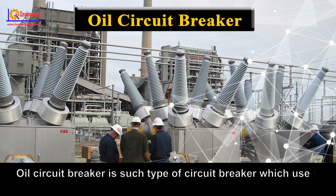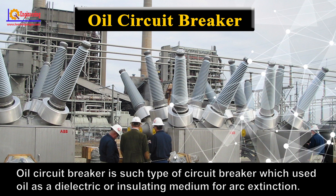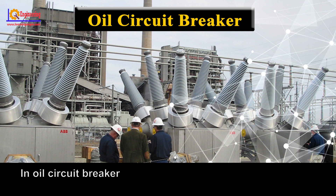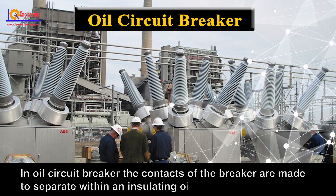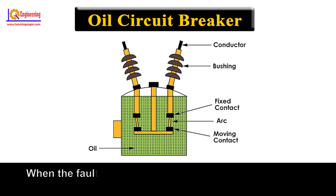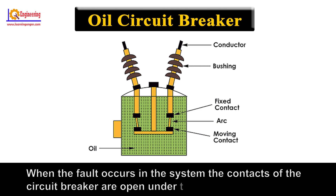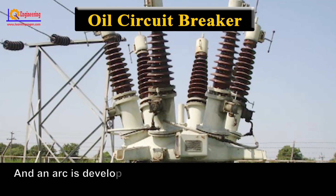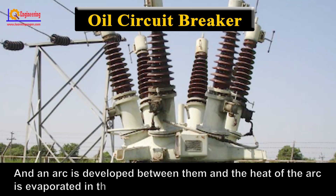An oil circuit breaker is a type of circuit breaker which uses oil as the dielectric insulating medium for arc extinction. In an oil circuit breaker, the contacts of the breaker are made to separate within an insulating oil. When a fault occurs in the system, the contacts open under the insulating oil, an arc is developed between them, and the heat of the arc is evaporated into the surrounding oil.